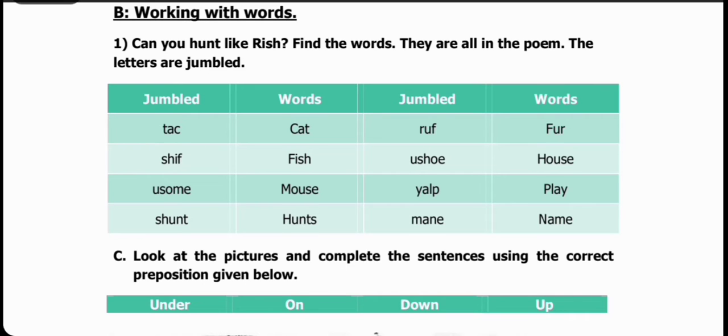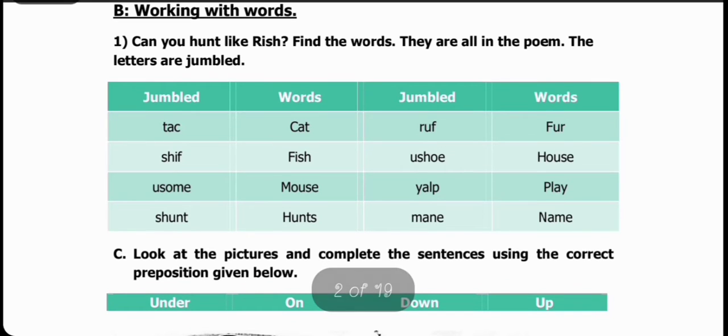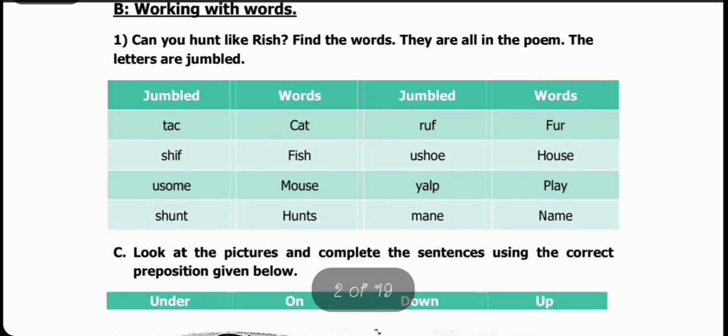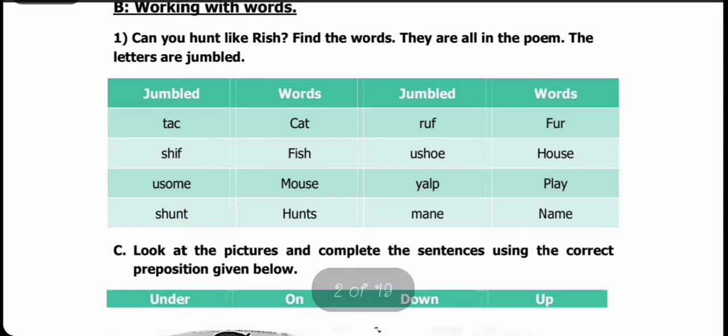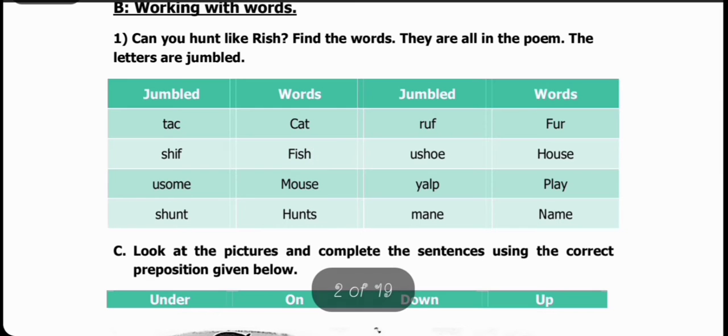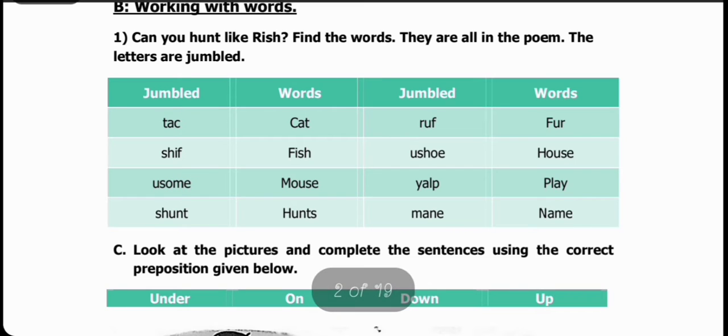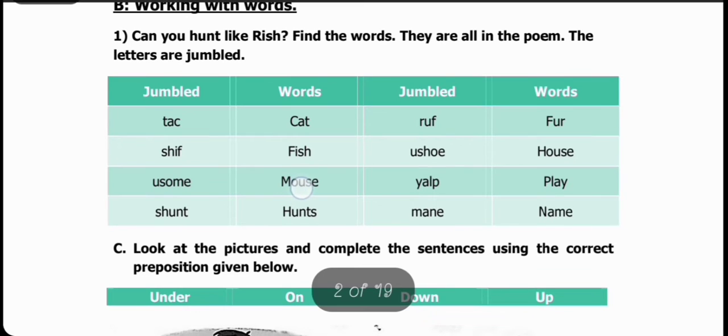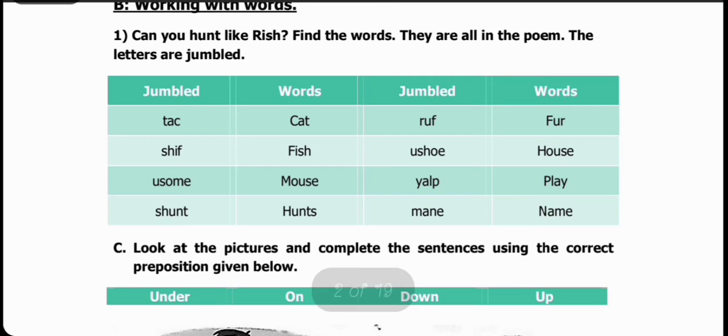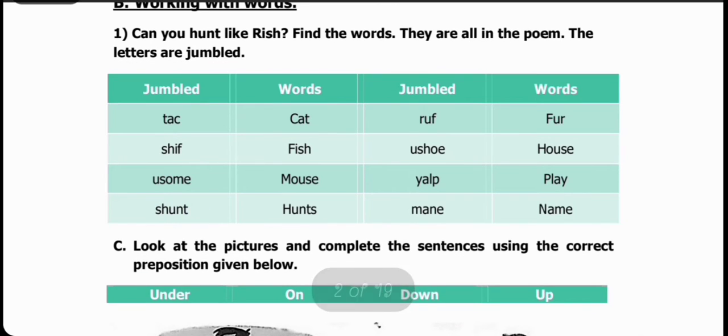First we have T-A-C. When we arrange it, what word will be formed? C-A-T, cat. S-H-I-F becomes F-I-S-H, fish. U-S-O-M-E becomes M-O-U-S-E, mouse. S-H-U-N-T becomes H-U-N-T-S, hunts.